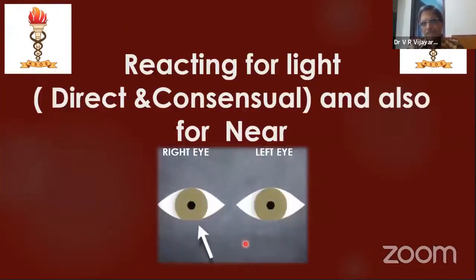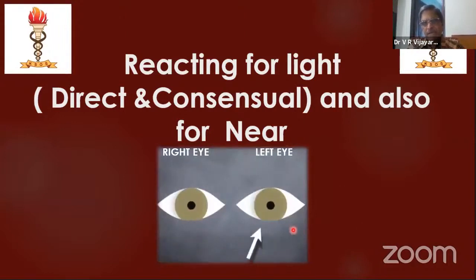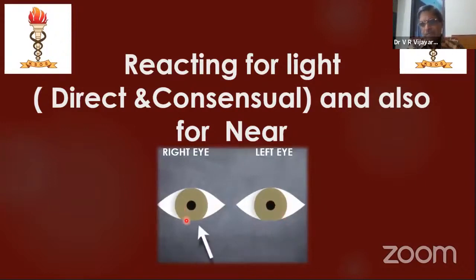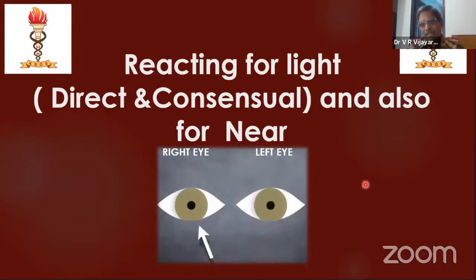Now this is the swinging flashlight test. You put light in the right eye — the right pupil reacts for direct — and at the same time the left pupil constricts for consensual. Then you swing the light to the left. This test is called the swinging flashlight test. If there is an afferent defect, you can easily identify it with the swinging flashlight test.